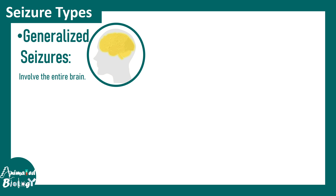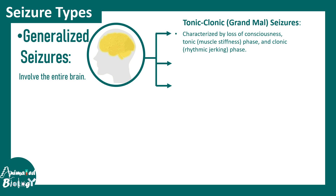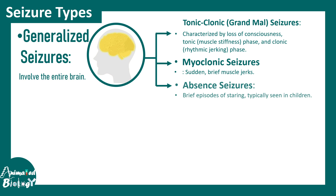Generalized seizures can be subdivided into tonic-clonic seizures, characterized by unconsciousness, a tonic phase of muscle stiffness, and a clonic phase of rhythmic jerking. There are also myoclonic seizures, which lead to a sudden brief jerk in the muscles, and absence seizures, which are brief episodes seen mainly in children.